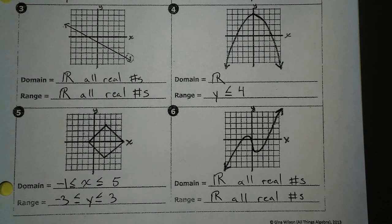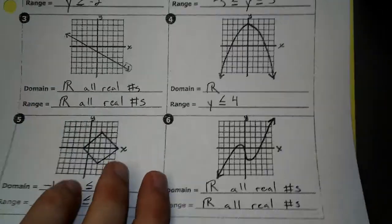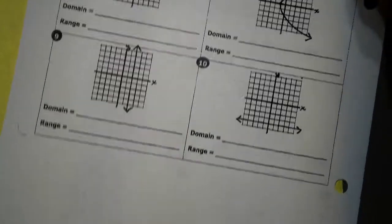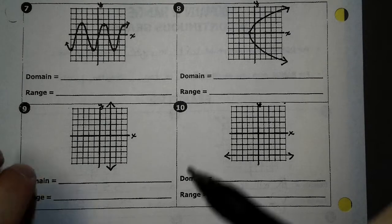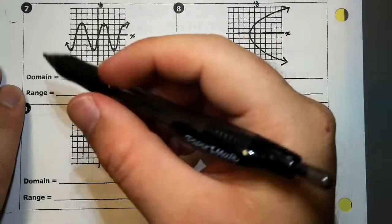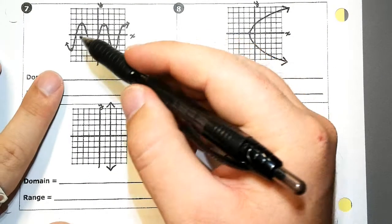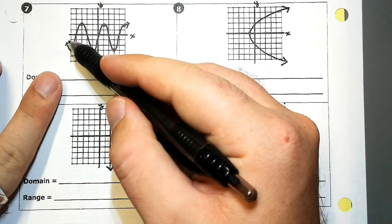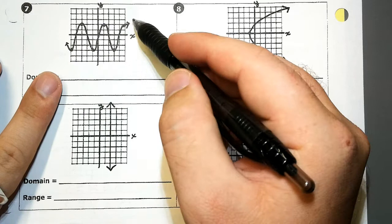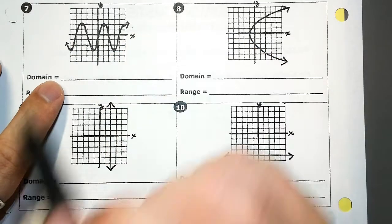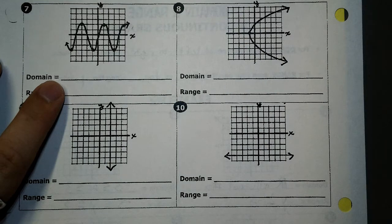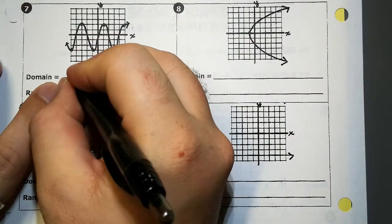All right, flipping over to the back. On number seven, let's start with our domain. Once again, we're going left to right. On the left side, I've got an arrow. On the right side, I've got an arrow. Whenever it goes forever in both directions, what do we call that? Good, that one's all real numbers.